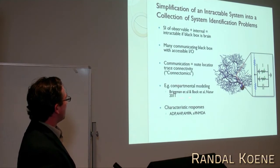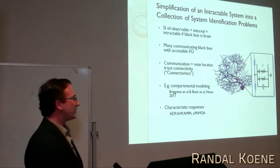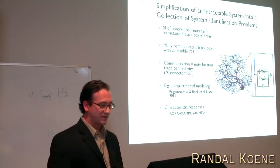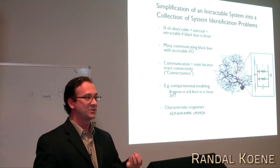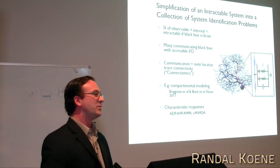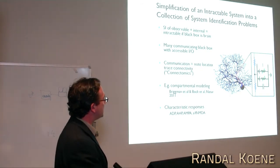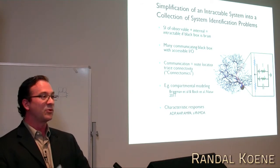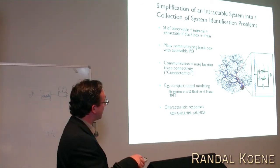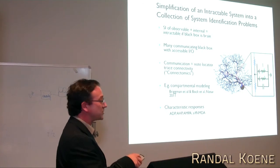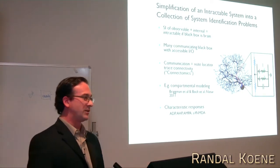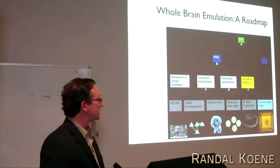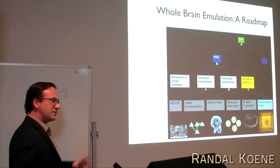Briggman et al. and Bock et al. published wonderful work in 2011, both in Nature. They reconstructed pieces of circuitry — from the retina and from the visual cortex — based on structural decomposition, matching it to functional recordings done beforehand. This proved as a proof of principle that it's possible to create a circuit from structural data, interpret it, and know something about the system you're working with.